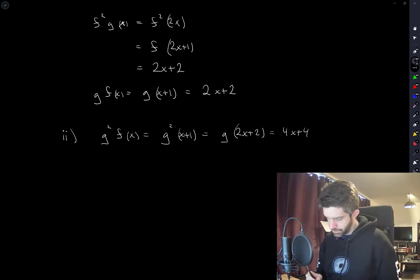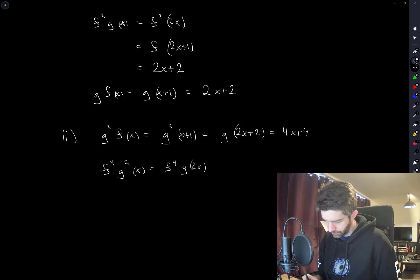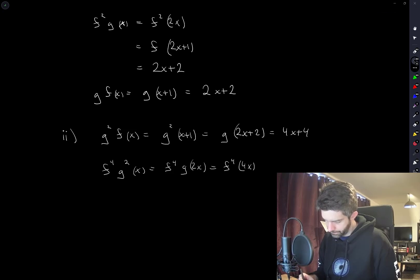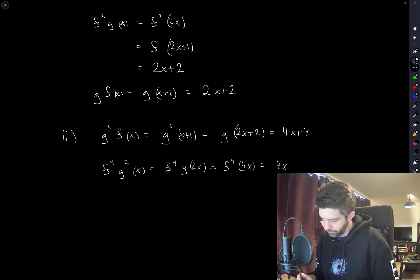Also, f to the 4 of g squared should work. This is f to the 4 of g of 2x, which is f to the 4 of 4x. Since f just adds 1 every time, this is going to be 4x plus 4.